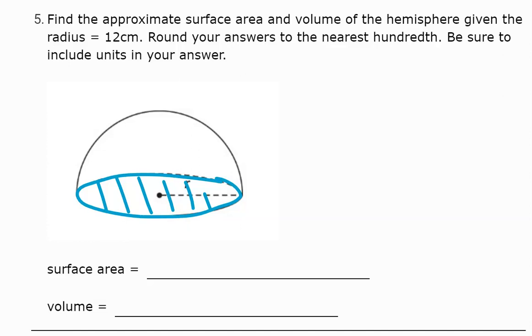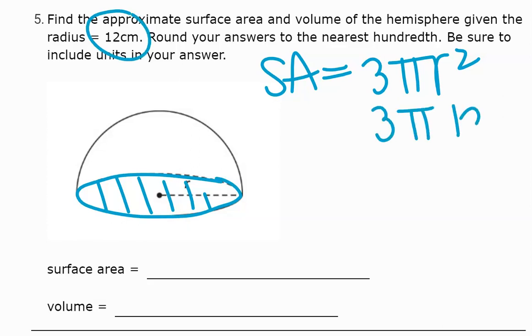But I give you a formula for this. The formula for the surface area of a hemisphere is on your formula sheet. It just becomes 3πr², so it's super straightforward. Here's the radius, I am 3π times 12 squared.